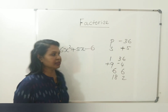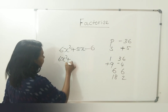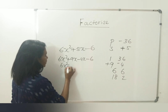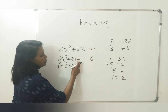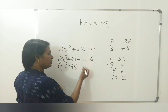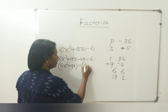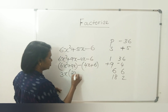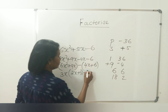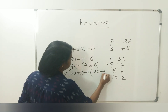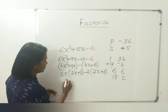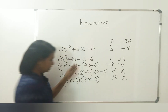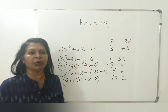The product is negative 36. So you can write: 6x squared plus 9x minus 4x minus 6. The next step is grouping: 6x squared plus 9x as one group, minus 4x minus 6 as another. Taking 3x as common, you get 2x plus 3. Then 2 is common, giving 2x plus 3. Again, 2x plus 3 is common, into 3x minus 2. These are the factors of the polynomial.